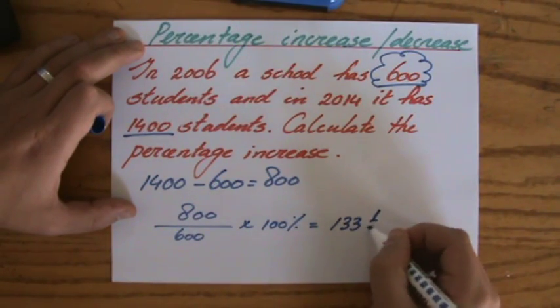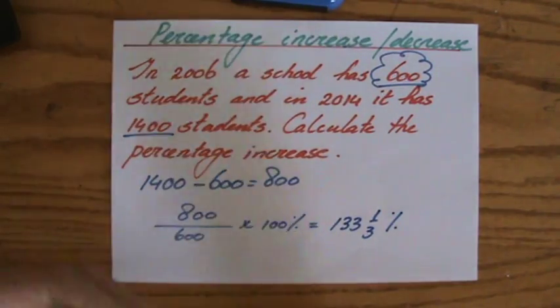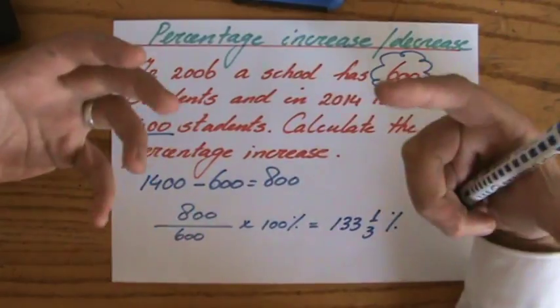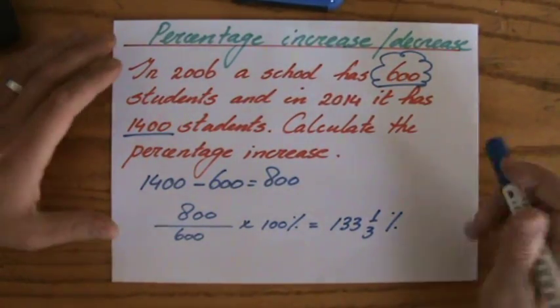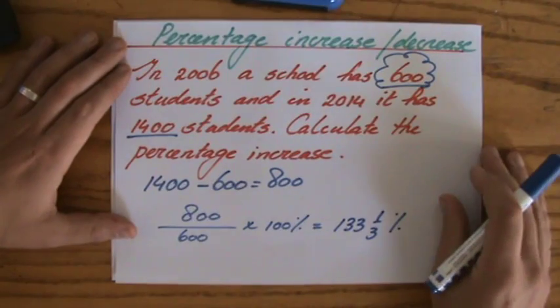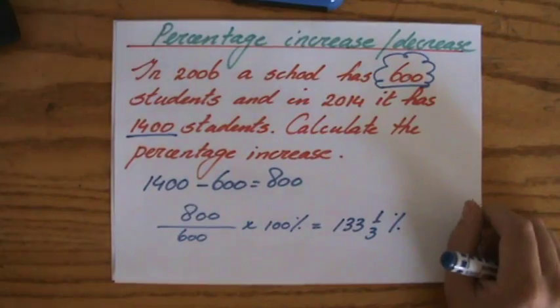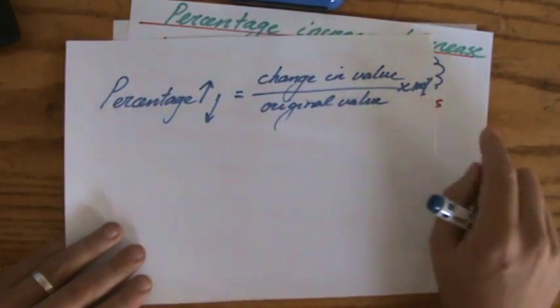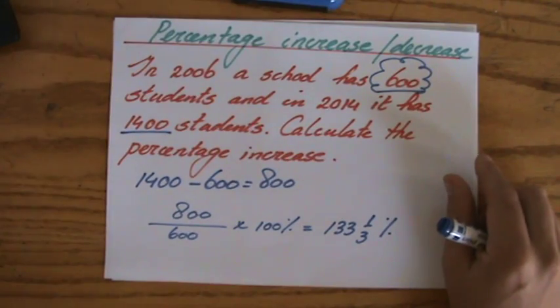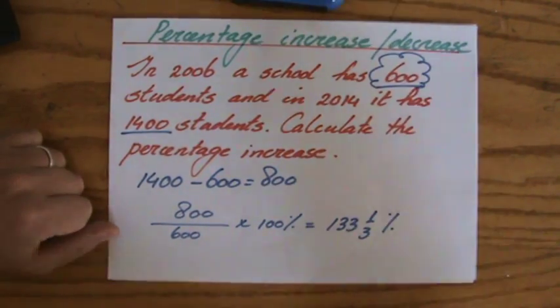I already told myself it's more than double - the students more than doubled, so I'm looking for an answer more than 100%. Remember: percentage increase or decrease is the change in value over the original value, times 100%. Let's try two more example questions. I'm sure you can do this yourself. I'll see you at the next video.